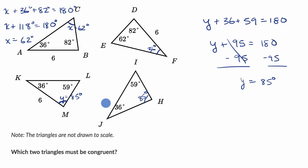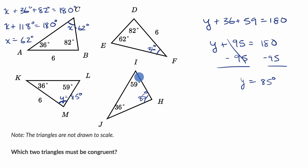Now, which of these triangles must be congruent? You might be tempted to look at the bottom two triangles and say all their angles are the same — angle-angle-angle — so they must be congruent. But that only tells us they are similar. We don't have any length information for triangle IJH. You need at least one side length to think about congruence. So we cannot conclude that triangles IJH and LMK are congruent to each other.